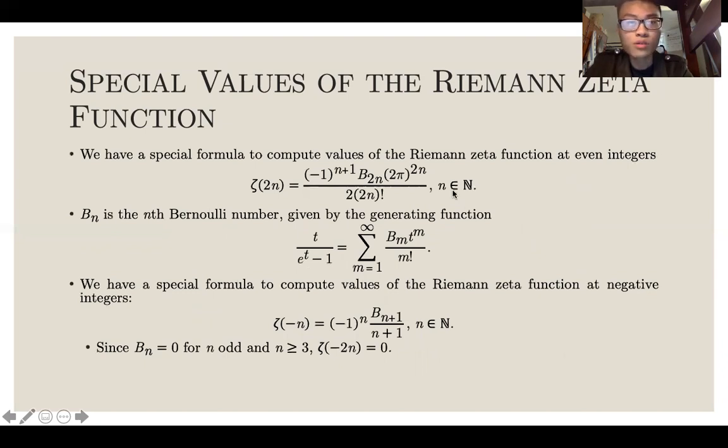We have a special formula to compute all the even integers, and it's given by this. B of n is the nth Bernoulli number given by the generating function. We have a special formula to compute values of the Riemann zeta function at negative integers. Since B of n is zero for n odd and n greater than 3, zeta of negative 2n is zero. In other words, the Riemann zeta function at negative even integers is zero.